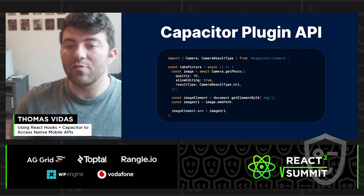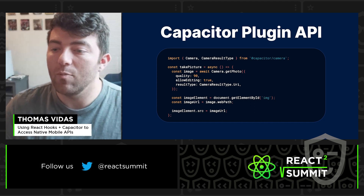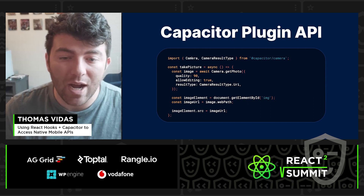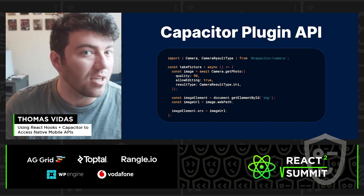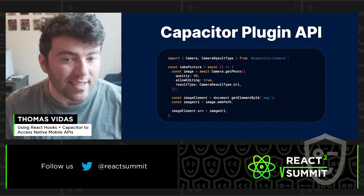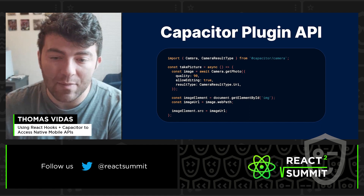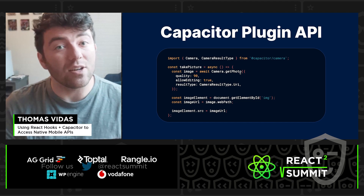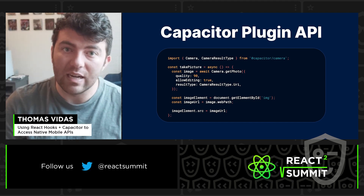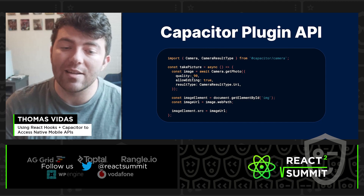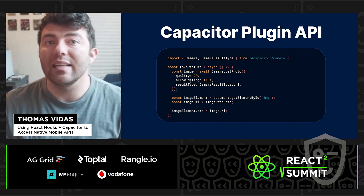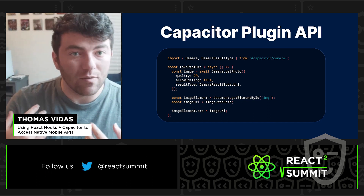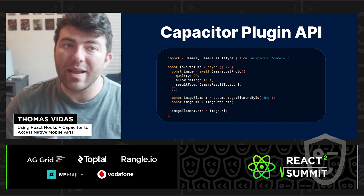Using the Capacitor plugin is pretty straightforward. Let's go over how to use the camera plugin. We import our camera from the Capacitor camera package. We have a camera object and a result type, which just tells us if this is a URI or base64. A camera has a function called getPhoto, which allows us to take a new photo or access our gallery via a single function call, setting quality or opening the native editor — something we can't do on the web or a PWA.